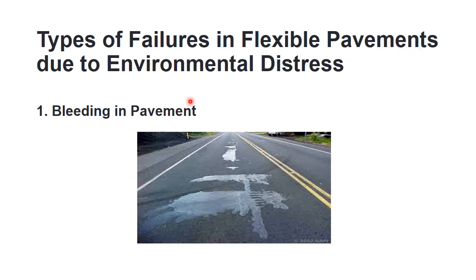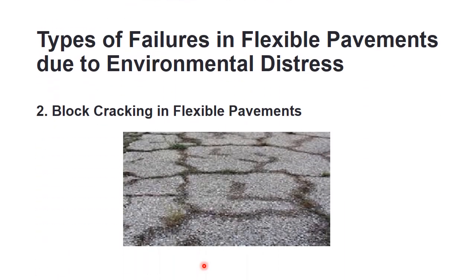Types of failures due to environmental distress: the first is bleeding. Bleeding in flexible pavement is a phenomenon of formation of a film of asphalt binder over the pavement surface. The occurrence of bleeding gives a shiny, glossy, reflective surface. The layer will have bubbles seen as blisters, and the asphalt binder formed will be sticky in nature.